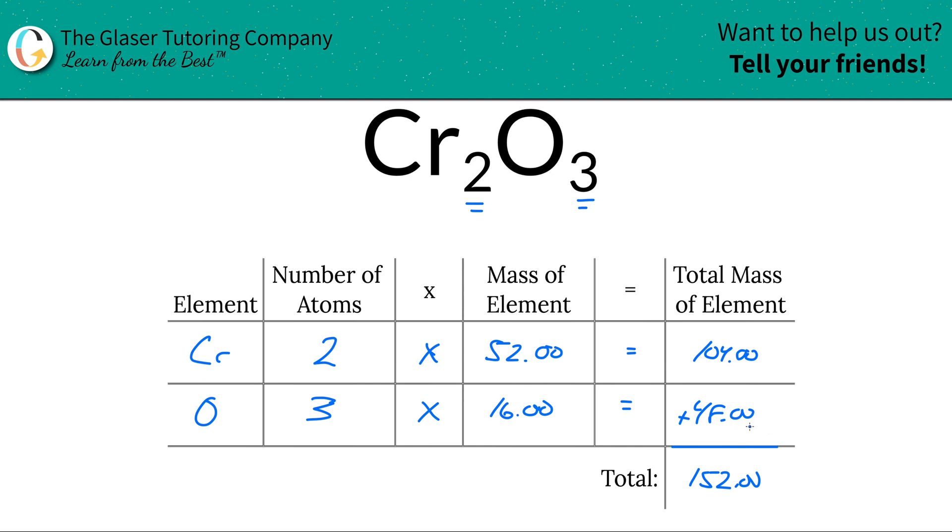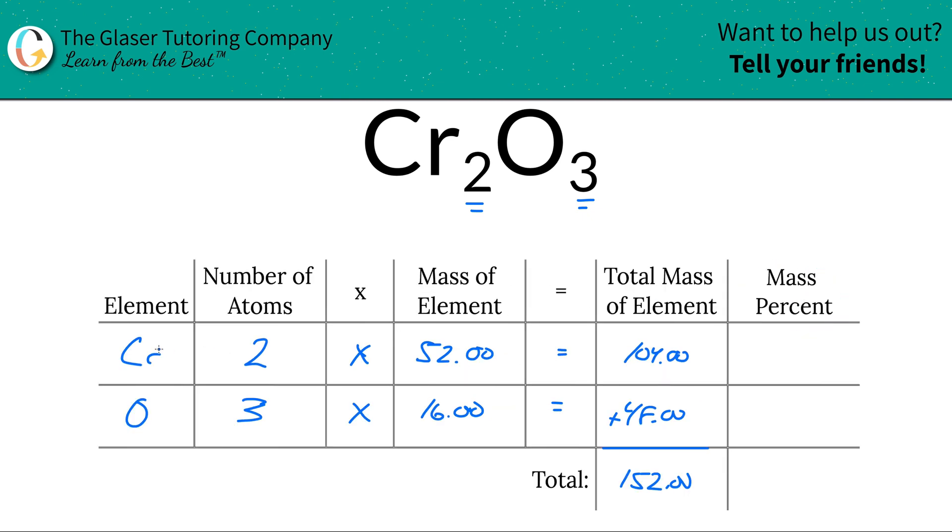So to find the mass percent of, let's say, chromium, we need to take the total mass of chromium and divide it by the total mass of the entire compound - hence why we had to do that first. So this is basically 104 over 152.